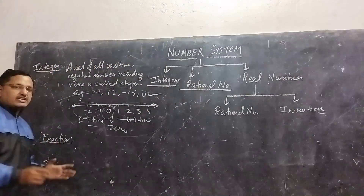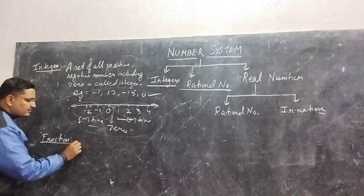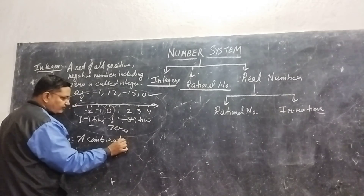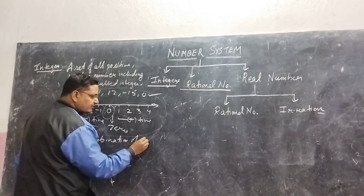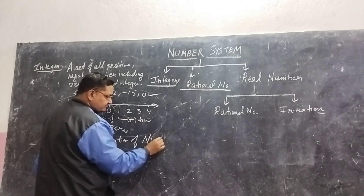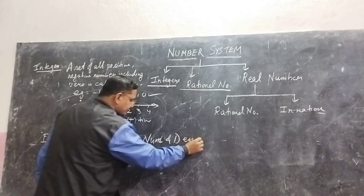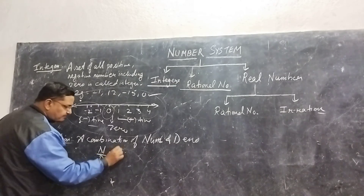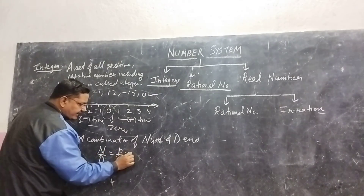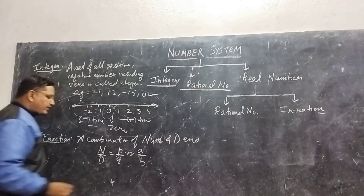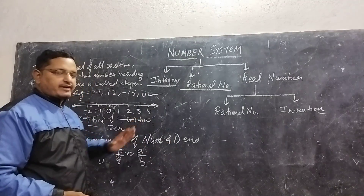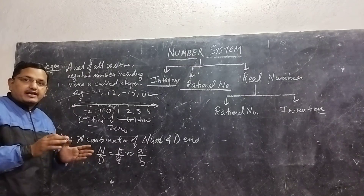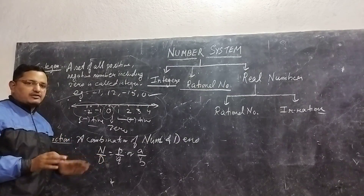A fraction is normally defined as a combination of a numerator and a denominator. We write a fraction as numerator by denominator — that is the form of P by Q or A by B. So, a number which can be expressed in the form of A by B is called a fraction.